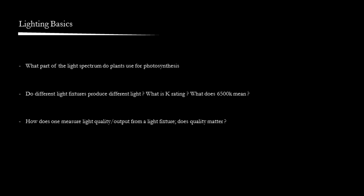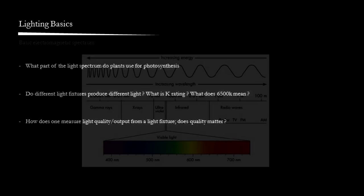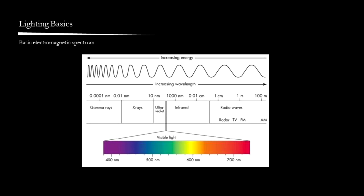Next, I'll talk about do lighting fixtures actually produce different light. Then putting the first two questions together, we get methods to measure light quality or output from a light fixture. In the entire electromagnetic spectrum, plants only use the narrow band of visible light for photosynthesis. Plants cannot use ultraviolet light or infrared light for photosynthesis. Only light that is visible to the human eyes is used by plants for photosynthesis.